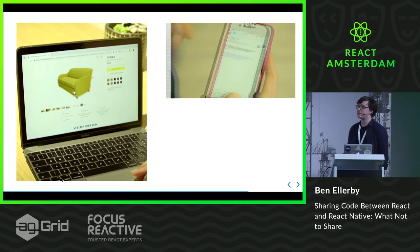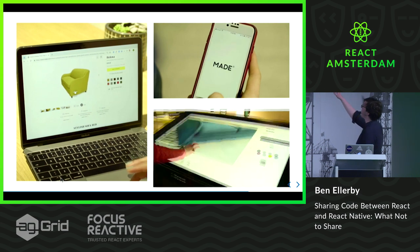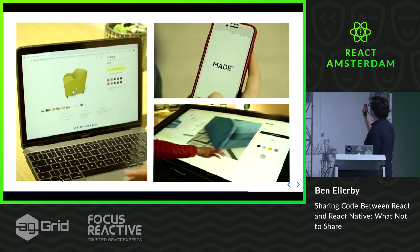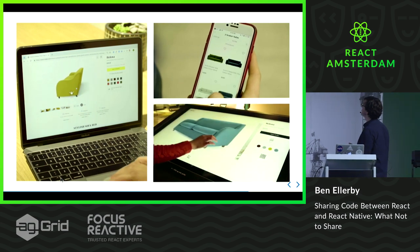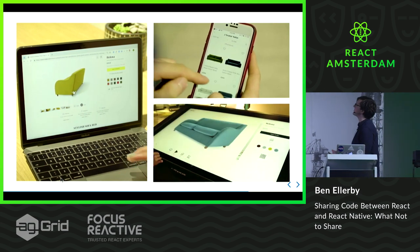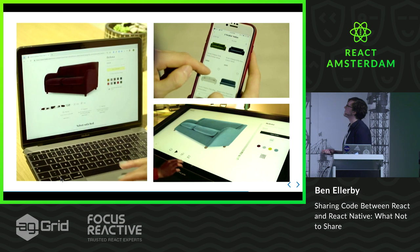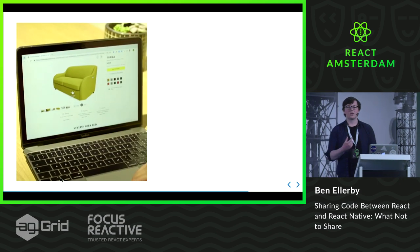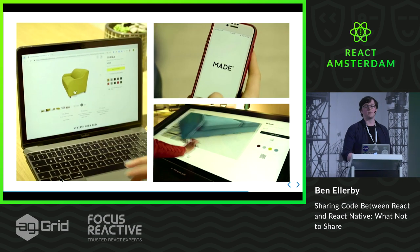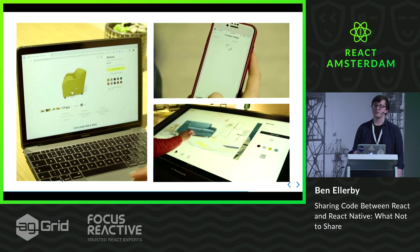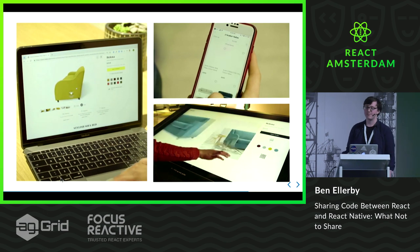The result of this is that we have these three applications which have different user experiences. Although the branding looks the same, the experience of web and native is different. But we had code sharing across these, which allowed us to go faster and reduce the bugs we were having.